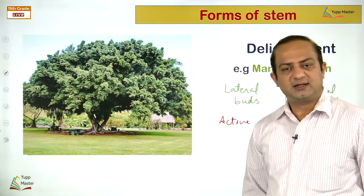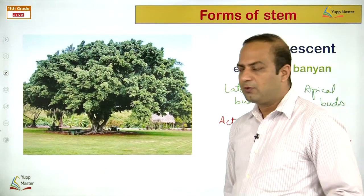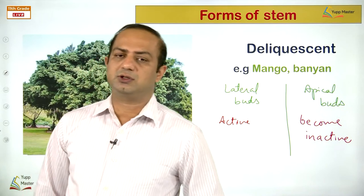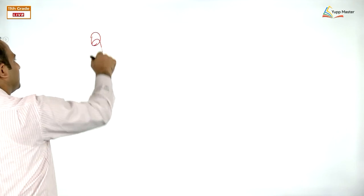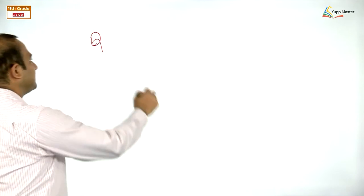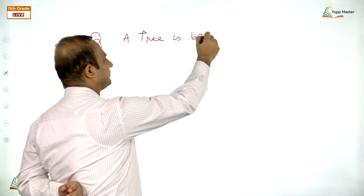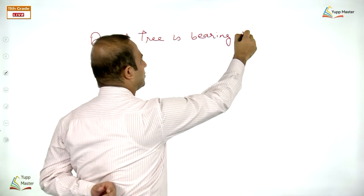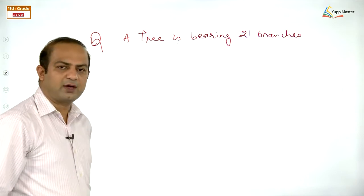Perennating structures must be able to propagate and survive unfavorable conditions. Underground stems provide better protection — from forest fires, floods, and predators — because all aerial parts may be lost in such events but underground structures remain protected. They give rise to new plants when conditions become favorable again.